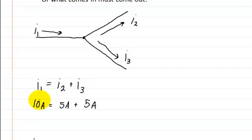And so, for instance, I1 for an example would be, let's say 10 amps. And then I2 could be 5 amps and I3 could be 5 amps. So long as this equals 10 amps, that's all there is to it.